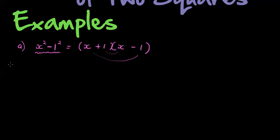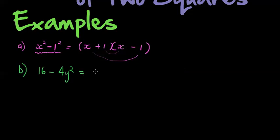Let's think of another example, a bit more difficult: 16 minus 4y squared. Again we see two terms, and I can first look for a common factor. In this case I actually can — I can take out 4 as a common factor, leaving me with 4 minus y squared. To completely factorize means that each of my factors must be a prime algebraic factor.